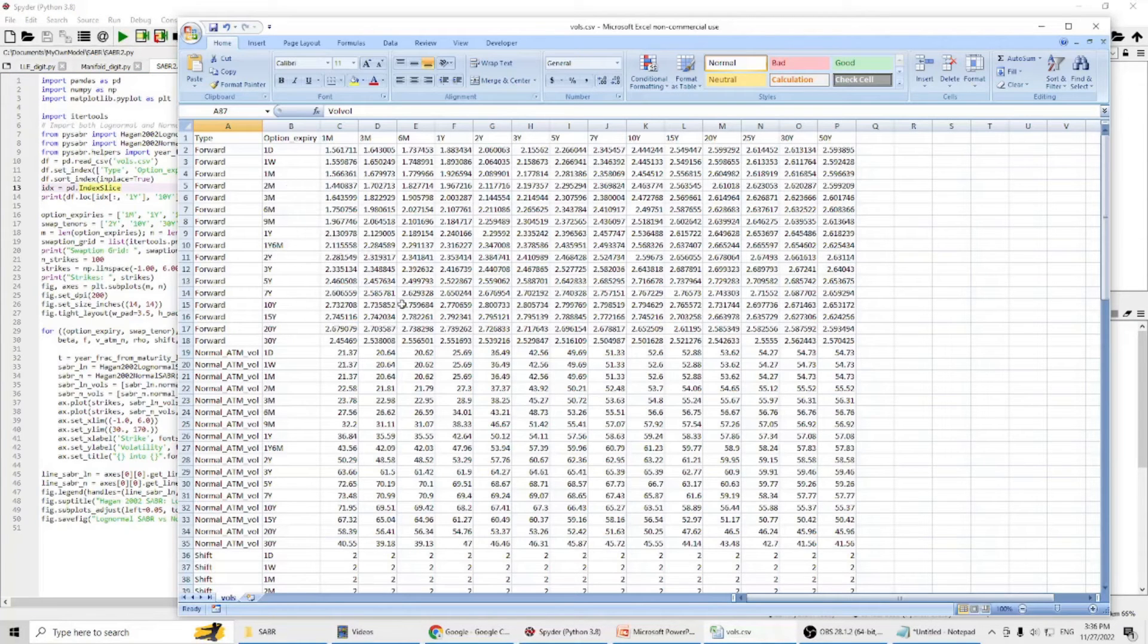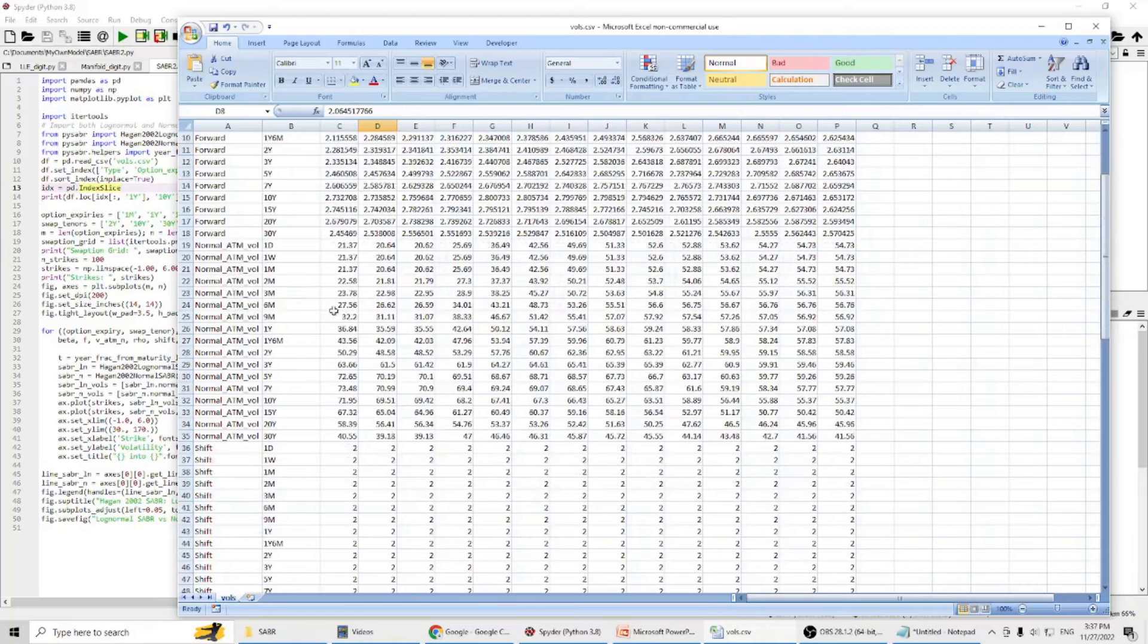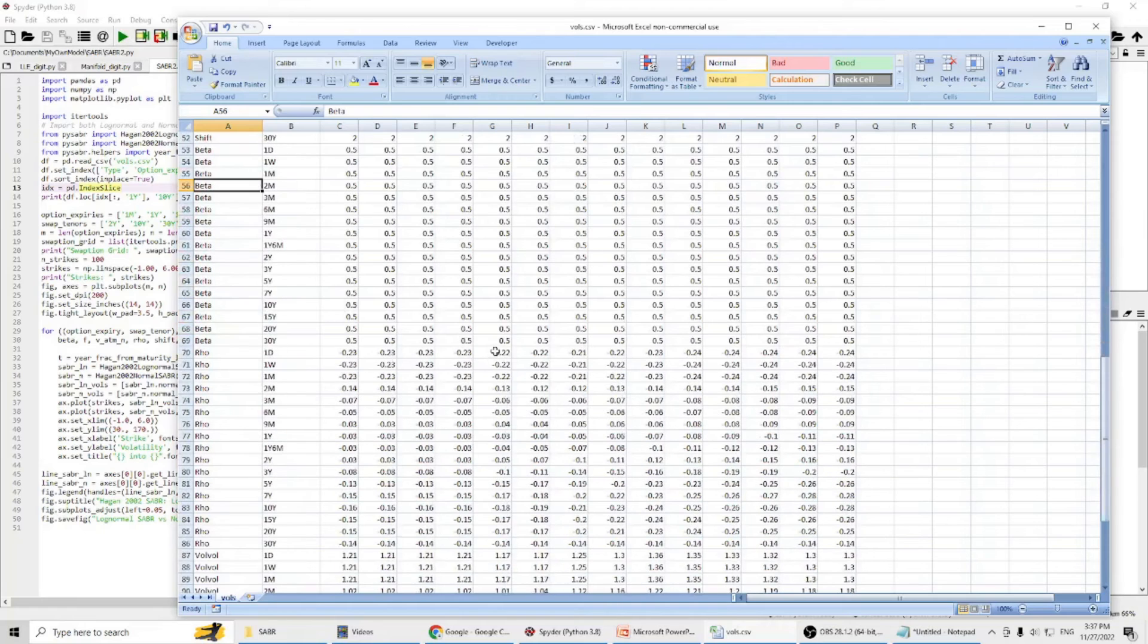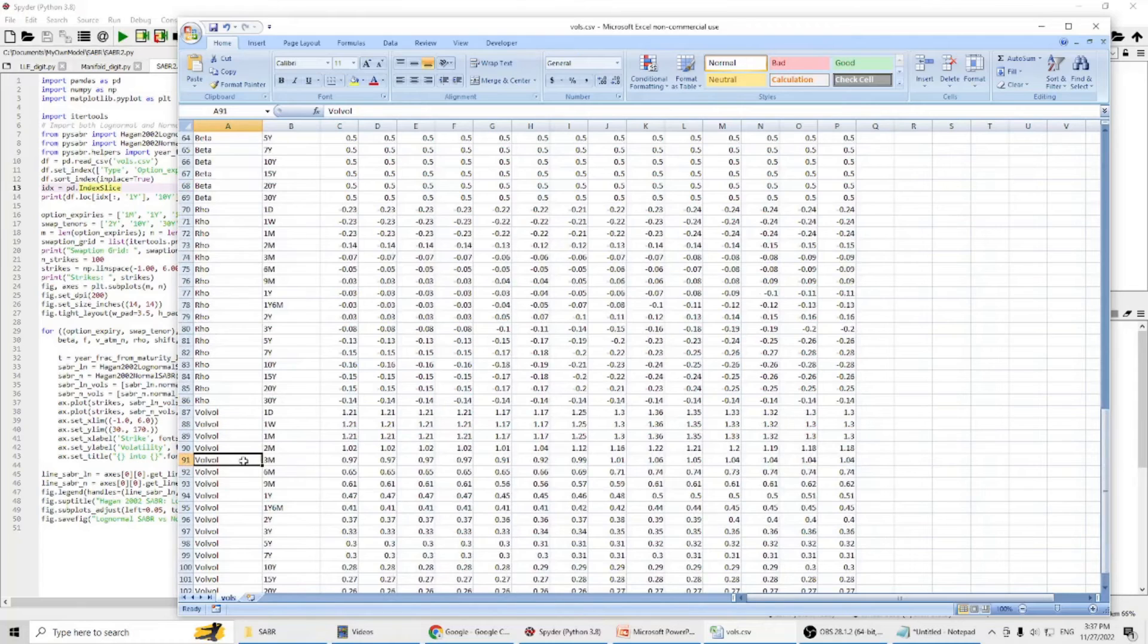Let me use some swaption data to compare them. This file contains the data we use as input. This is the option expiration from one day to 30 years. This is the tenor for the swaption, up to 50 years. We have a forward rate here, at the money volatility, the shift, beta, and also rho here.